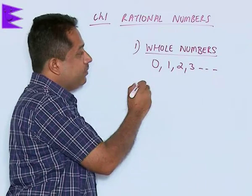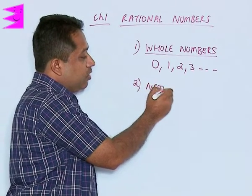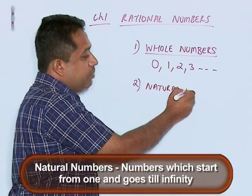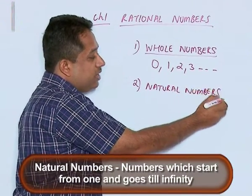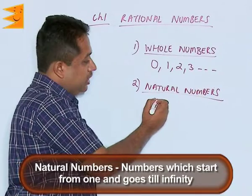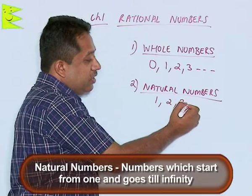Then we have natural numbers. Natural numbers are numbers which start from 1 and go up to infinity. So natural numbers start from 1, we have 1, 2, 3, and it goes on up to infinity.